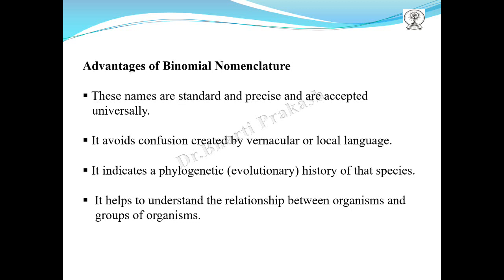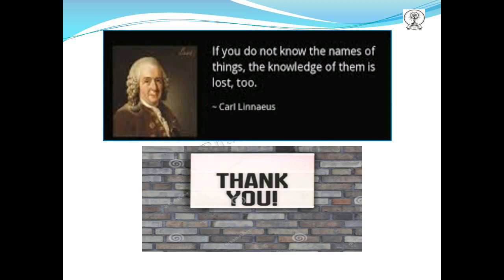What are the advantages of binomial nomenclature? These names are standard, precise, and accepted universally. It avoids confusion created by vernacular or local language. It indicates the phylogenetic history of a species and helps to understand the relationships between organisms and groups of organisms. With this we understand how and why naming an animal is important, and that the name should be a scientific name.